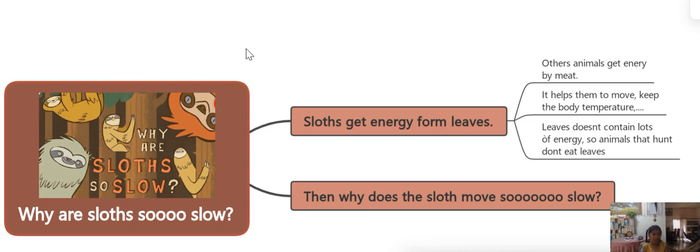And sloths are so slow because their energy is just from leaves. Especially the three-toed sloth. They just eat leaves, leaves and leaves. There's nothing out there to eat. Well, leaves, as you've known, they don't contain a really high amount of energy. And that wouldn't help the sloth to move quick. And if it moves quick, then it's going to need to take a lot of other energy and nutritious things so that it can move.